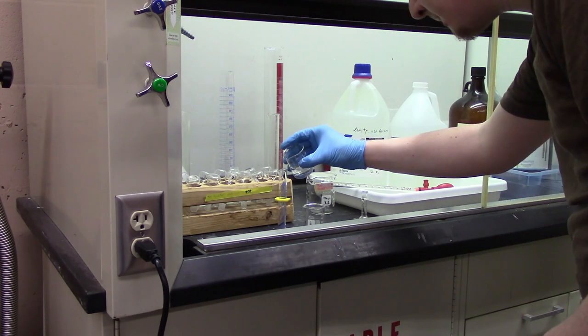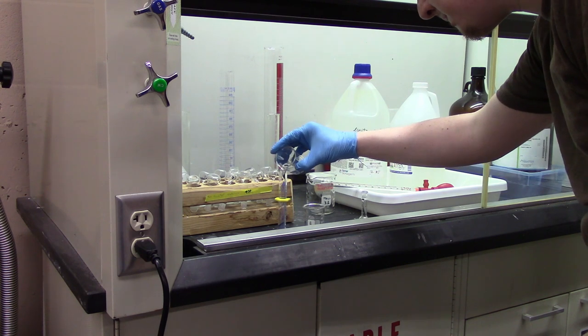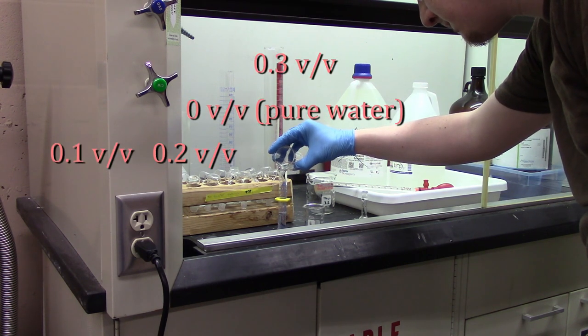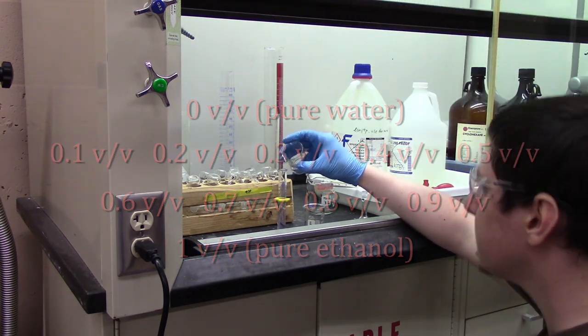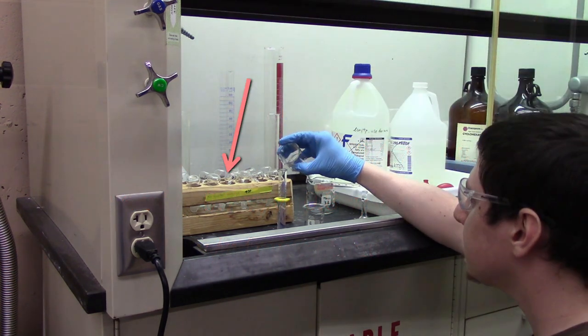Using two graduated cylinders, one for ethanol and the other for water, prepare 11 standardized solutions with ethanol volume fractions ranging from 0 to 1. The workstation should have plenty of 10 mL volumetric flasks available to store each solution.